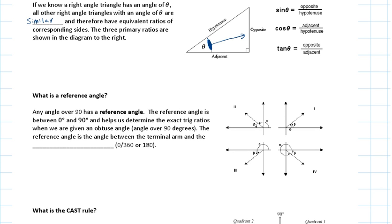Another thing we learned about last year is the reference angle. Any angle over 90 has a reference angle, and the reference angle is between 0 and 90. It helps us determine exact trig ratios when given an obtuse angle. The reference angle is the angle between the terminal arm and the closest x-axis. If the terminal arm is in the first quadrant, the angle and the reference angle are the same.